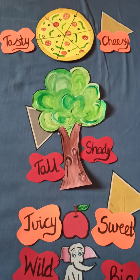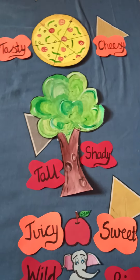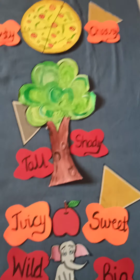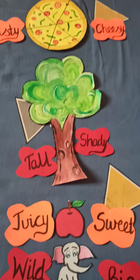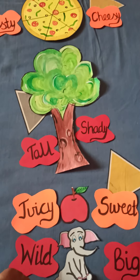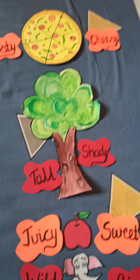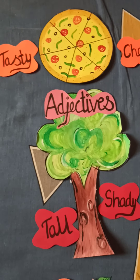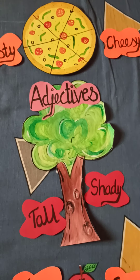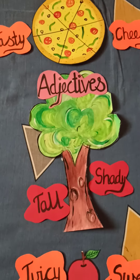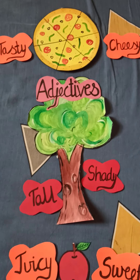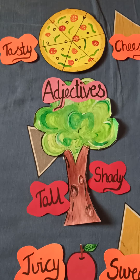So students, the words that describe a noun — pizza, tree, apple, elephant — all are our nouns. So the words that describe our nouns, they are called adjectives. So our today's topic is adjective. What are adjectives? Adjectives are the words that describe nouns.